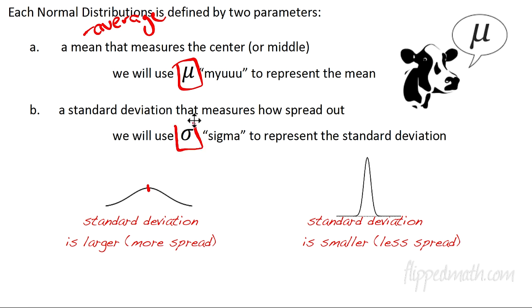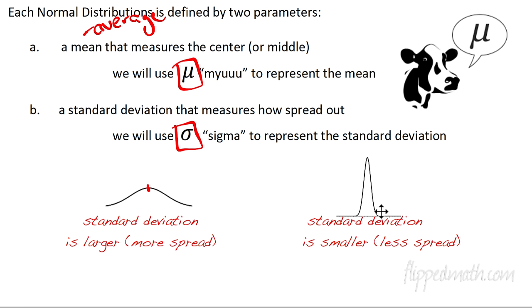We also need to know how spread out the data is, and for that we're going to use a different Greek letter called sigma — lowercase sigma. It represents the standard deviation, which tells you how spread out the data is. The curve on the right has a very high peak because the standard deviation is smaller, meaning the data isn't spread out very much. But if the standard deviation is greater, the data is spread out more.